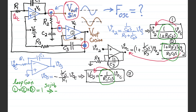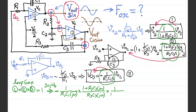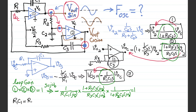Setting S = jω at the frequency of oscillation ω₀, the loop gain product becomes: [−1/(R1·C1·jω)] × [(1 + R3·C3·jω)/(R3·C3·jω)] × [1/(1 + R2·C2·jω)] = 1. Now I'll make a practical assumption: R1·C1 = R2·C2 = R3·C3 (i.e., all RC time constants are equal). This is reasonable and enforced in practice.